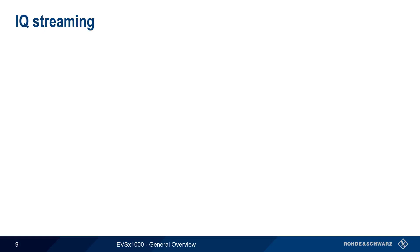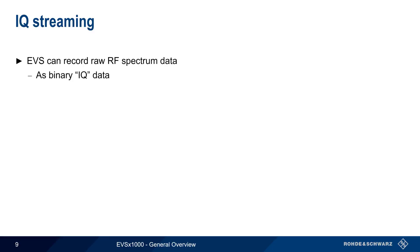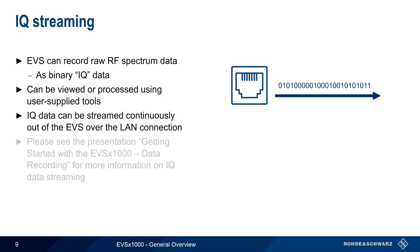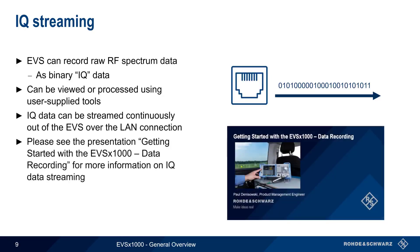In addition to making measurements of NAVAID and COM signals, the EVS can also simultaneously record raw RF spectrum data in binary format as so-called IQ data. This digital representation of spectrum can then be viewed and processed using user-supplied programs or tools. The EVS can store this IQ data in the form of files, but it can also stream the data out continuously over its LAN connection. Please see the separate presentation, Getting Started with the EVS1000 Data Recording, to learn more about configuring and using IQ streaming.